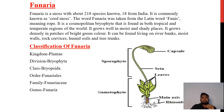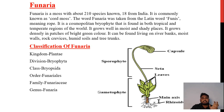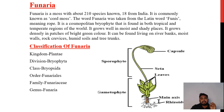Funaria is a moss with about 210 species known, 18 from India. It is commonly known as cord moss. The word Funaria was taken from the Latin word 'funis' meaning rope. It is a cosmopolitan embryophyte found in both tropical and temperate regions of the world. It grows well in moist and shady places, densely in patches of bright green color. It can be found on river banks, rocks, rock crevices, humid soils and tree trunks.